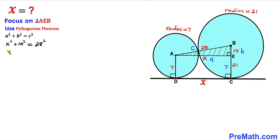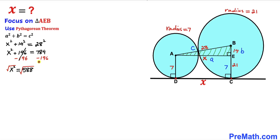Let's simplify. 14 squared is 196 and 28 squared is 784, so we have x² + 196 = 784. Subtracting 196 from both sides gives us x² = 588. Taking the square root on both sides, x equals the square root of 588.